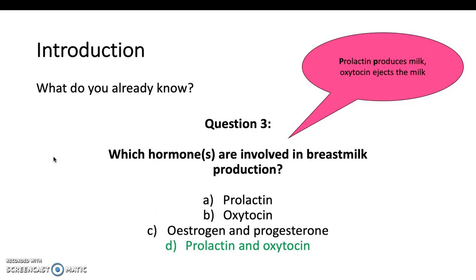The answer is prolactin and oxytocin. Prolactin and oxytocin production is stimulated by a baby latching onto the nipple. Prolactin's role is to produce the milk — helpful to remember: prolactin produces. Oxytocin is the hormone that helps with the ejection of the milk, also termed the milk ejection reflex or the letdown. Oxytocin is also involved in helping the uterus contract, reducing the risk of postpartum haemorrhage, and it plays an important role in mother-baby bonding. It is a powerful antidepressant linked to a lower risk of postpartum depression. Prolactin also inhibits ovulation.